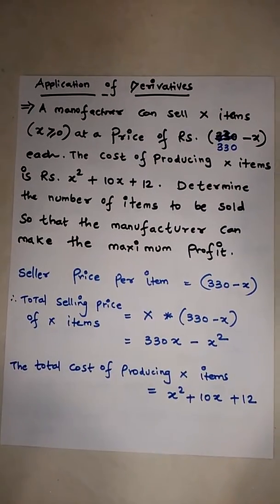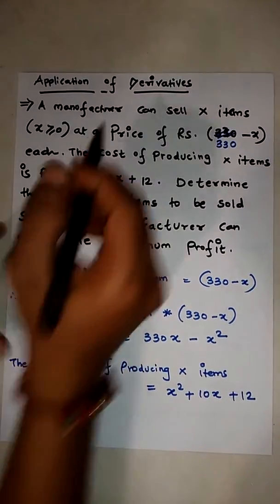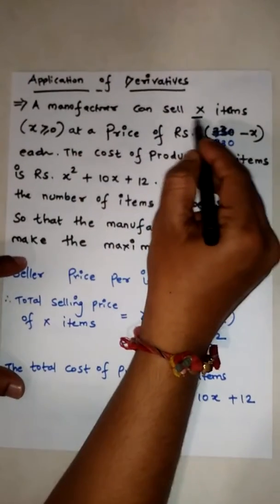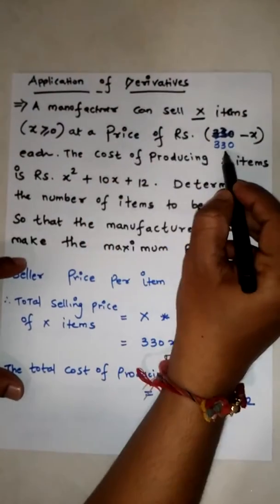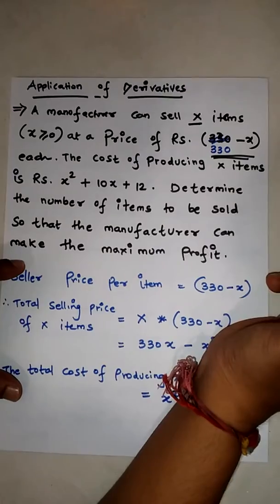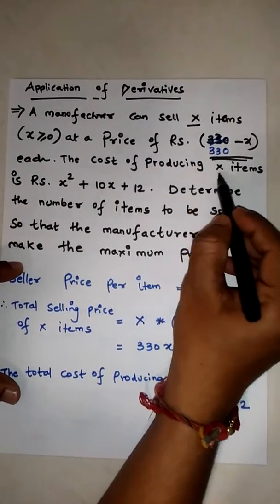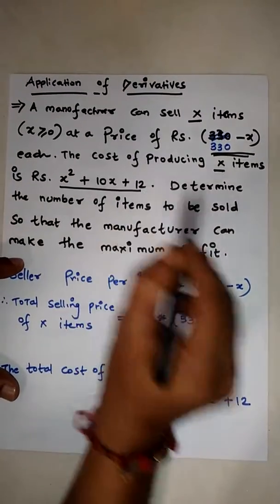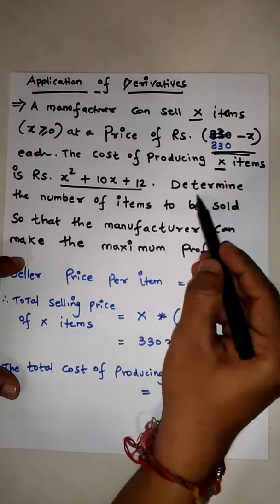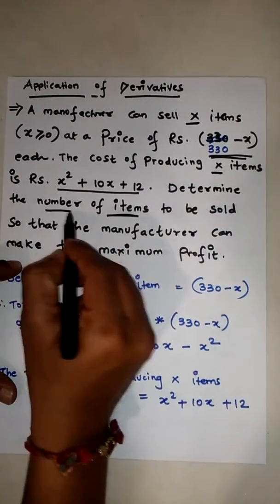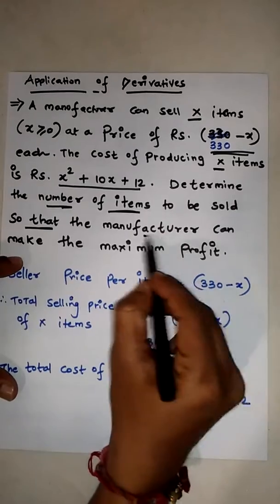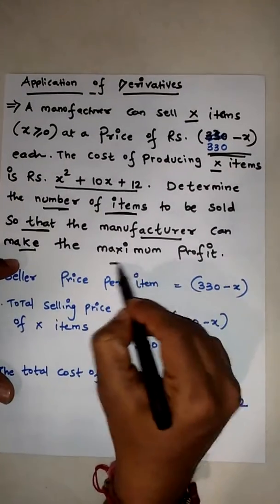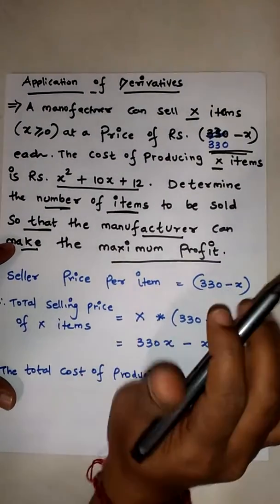Application of derivatives. Here we have an example: a manufacturer can sell x items at the price of rupees 330 minus x, and the cost for producing these x items is x squared plus 10x plus 12. We have to determine the number of items to be sold so that the manufacturer can make the maximum profit.